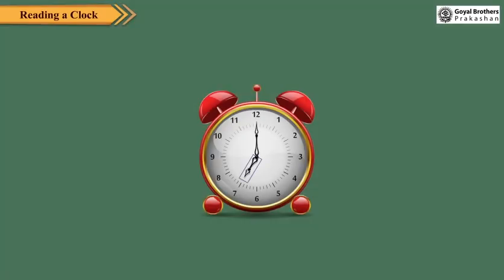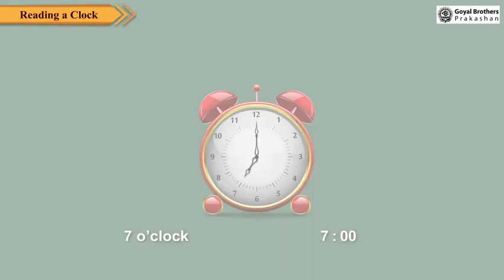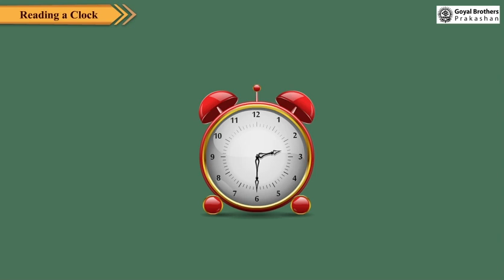Here, the hour hand is at 7 and the minute hand is at 12, so the time is 7 o'clock. We can also write it as 7.00. When the minute hand is at 12, the time is the exact hour shown by the hour hand.